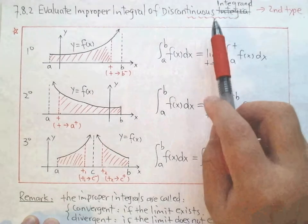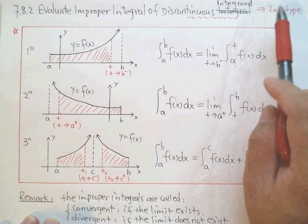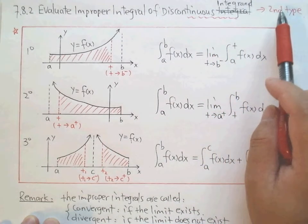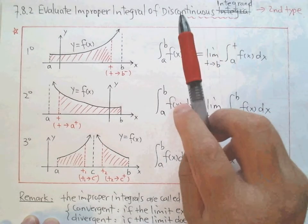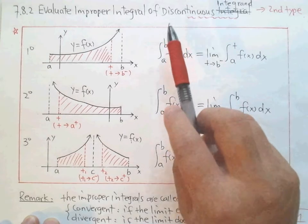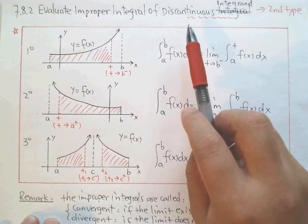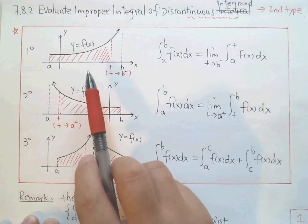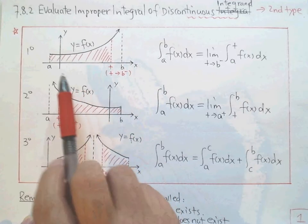The first type we did was the infinite interval. So this time the interval is finite. We have three cases, three definitions.